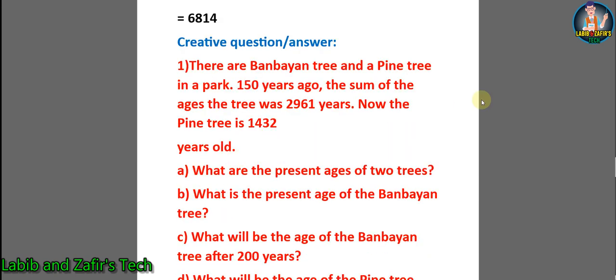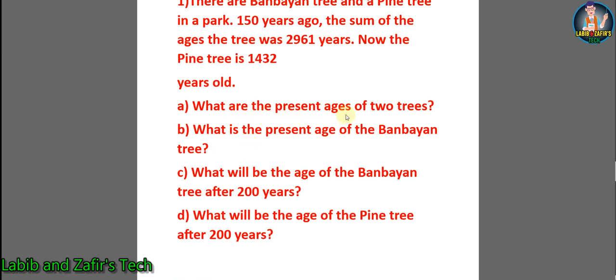All the short questions are complete. Now we will go through some creative question answers. There are two creative question answers and these are from chapter 2 only. Creative question number 1: There are a banyan tree and a pine tree in a park. 150 years ago, the sum of the ages of the trees was 2,961 years. Now, the pine tree is 1,432 years old.